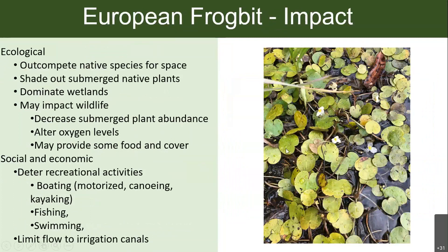Frogbit has pretty much every impact you hear about with aquatic plants. It can outcompete native species for space, and because it forms tightly packed floating mats, it's able to shade out submersed native plants and dominate wetlands. This decreases plant abundance, taking away valuable habitat for fish, and can alter oxygen levels — though it can provide some food and cover in the absence of native plants. In areas where recreation is important, those mats are going to impact boating, fishing, and swimming, and will also greatly impede water flow.